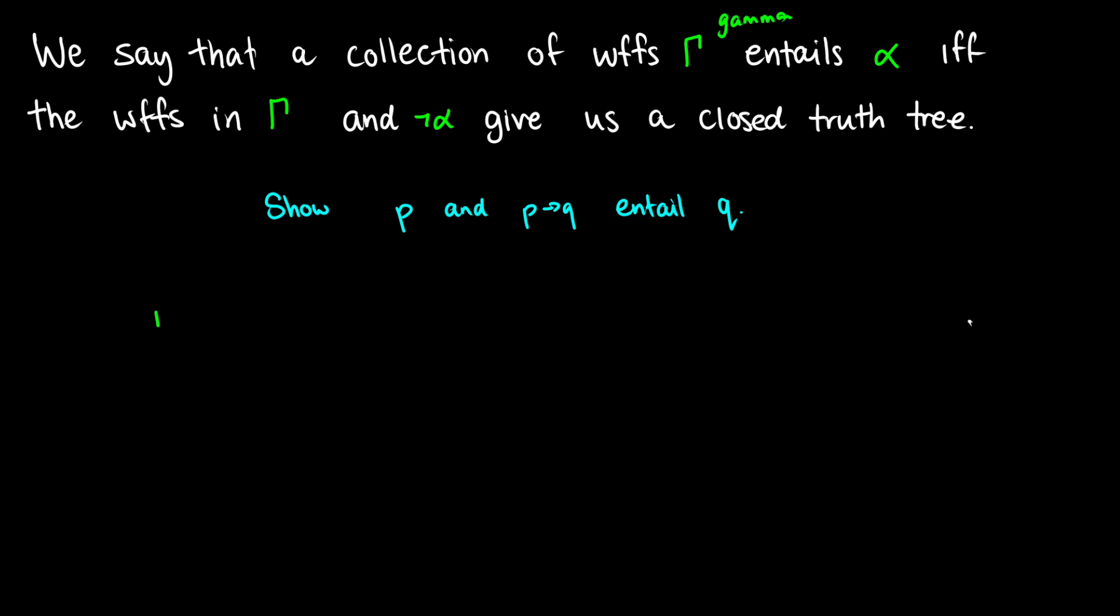In other words, if we have a bunch of things gamma that entails alpha, basically what that means is that if everything in gamma is true, then it must force alpha to be true. So by taking not alpha, what we're basically doing is we're saying can we construct a situation where gamma is true and alpha is false? Well, in that case it shouldn't happen if we have entailment. So it's sort of like negating our topology before we work with something. We're basically trying to show the premises are true and then we don't get our consequent.